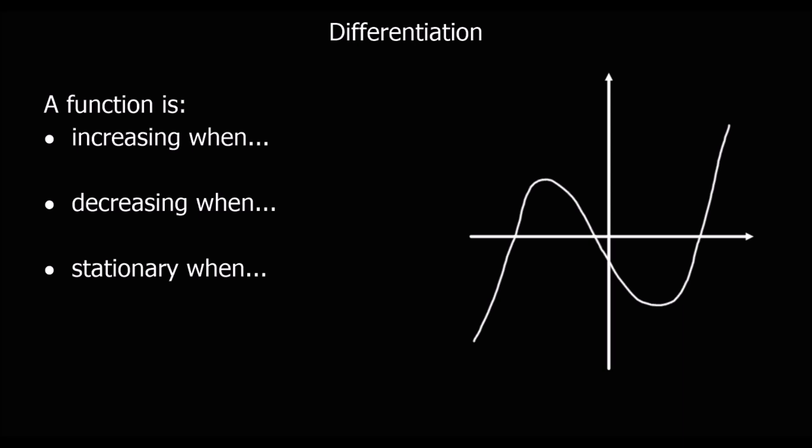This video is about using differentiation to find out when a function is increasing — so when it's got a positive gradient — when it's decreasing, that's when it's got a negative gradient, and when it's stationary, that's where its gradient is zero.